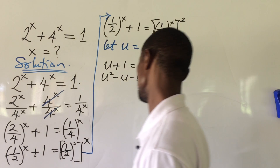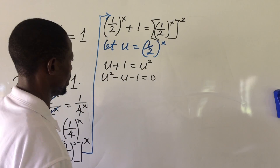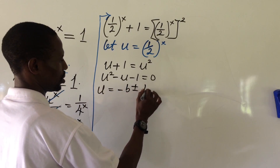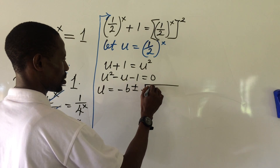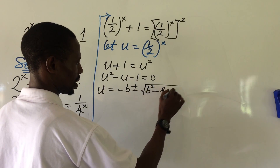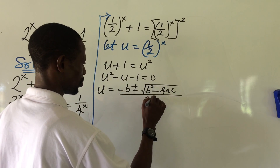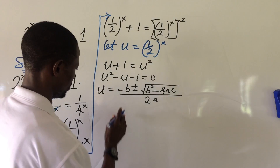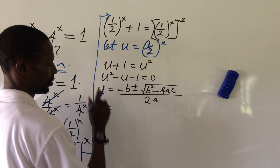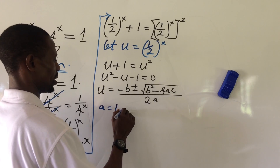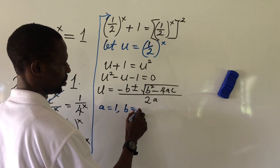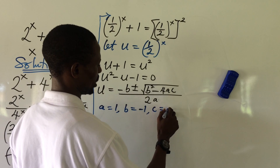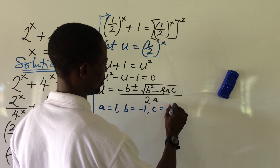Let's use the quadratic formula to simplify. The formula says u equals minus b plus or minus the square root of b squared minus 4ac, all over 2a. From our equation u squared minus u minus 1 equals 0, we identify a equals 1, b equals minus 1, and c equals minus 1.